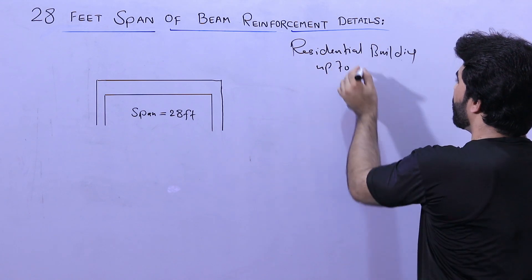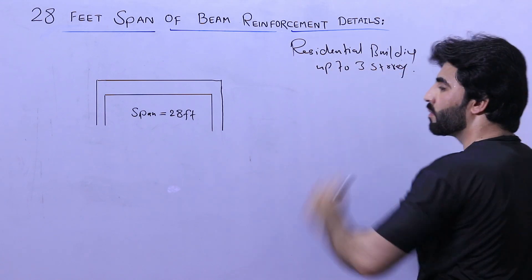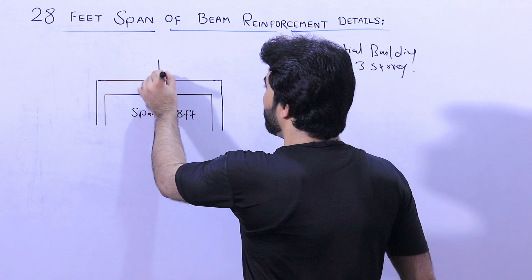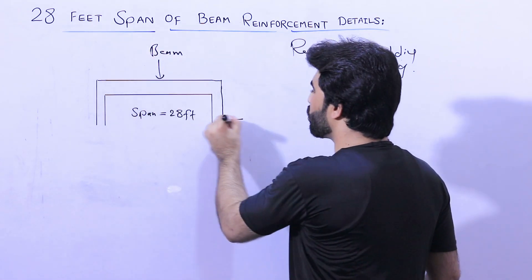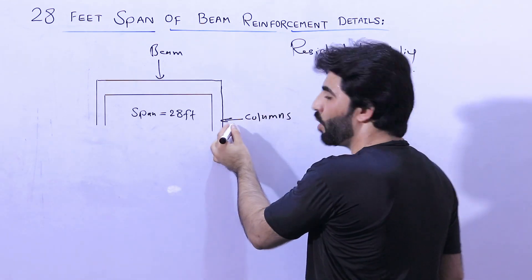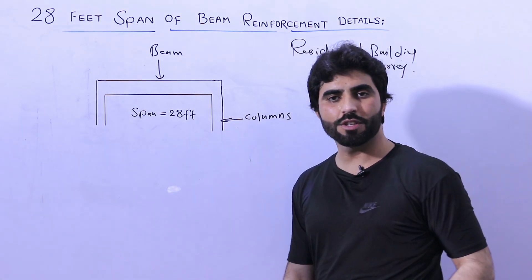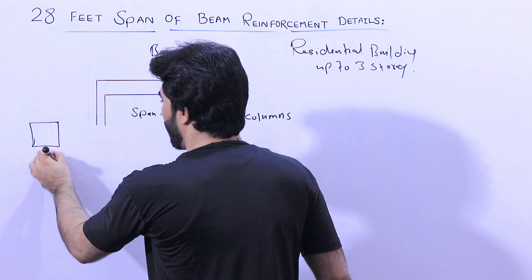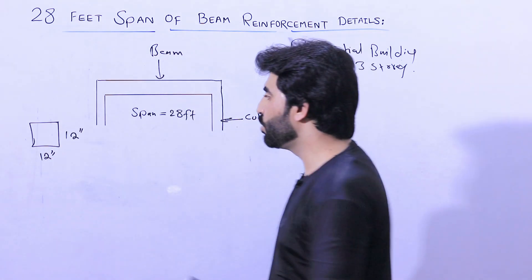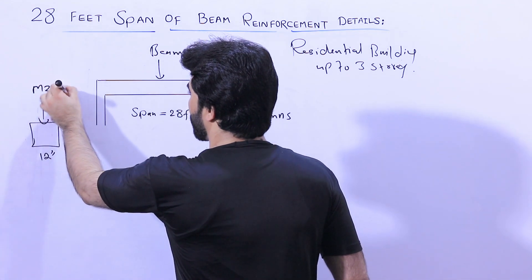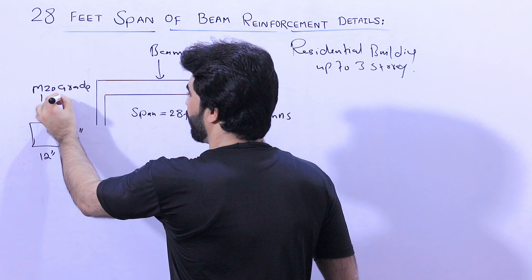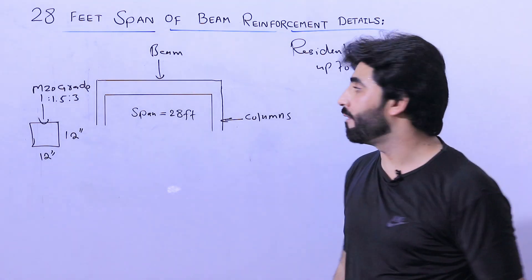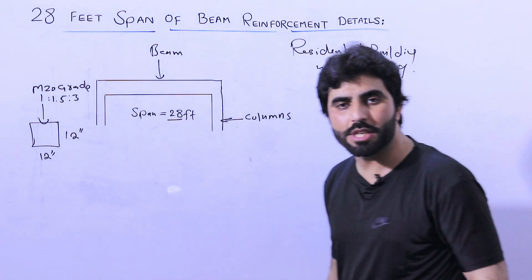As you can see, this is a diagram for beam and columns. The beam is supported by two columns. First, the column size is 12 inches by 12 inches for up to three storeys. We use M20 grade concrete where the mix ratio is 1:1.5:3. Now I am talking about the beam span which is 28 feet.